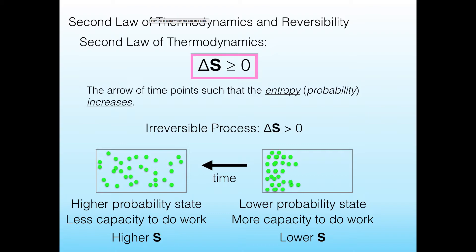Next we're going to talk about the second law of thermodynamics and the idea of reversibility, so the reversibility of a process. Again, the second law of thermodynamics says that the change in entropy has to either be greater than zero or equal to zero.